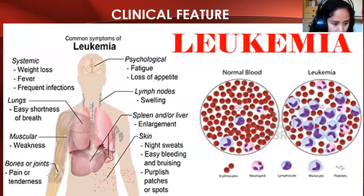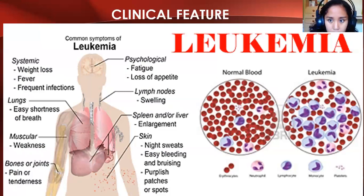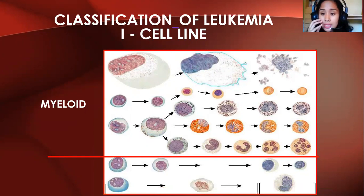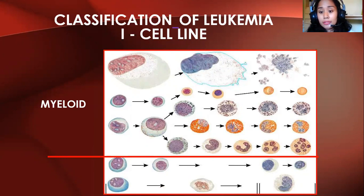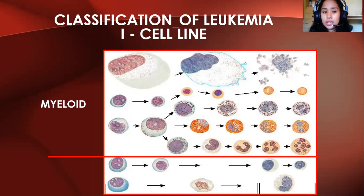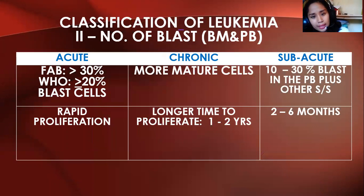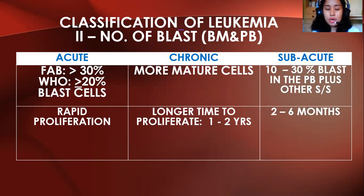For the classification of leukemia: depending on what cell line is affected — myeloid stem cells give myeloid leukemia (affecting RBCs, granulocytes, megakaryocytes), or lymphoid line giving B cells, plasma cells, and T cells. Another important classification is acute versus chronic leukemia, with sub-acute as well. All leukemias will show more than 20% blast cells according to WHO classification.